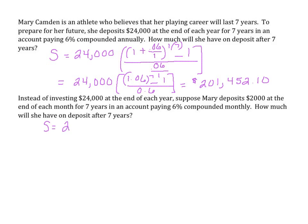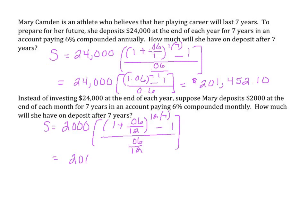The amount she will have is her payment of $2,000 times the quantity (1 plus 0.06 divided by 12), since we're compounding monthly. The exponent is 12 times 7 years, and then we subtract 1. All over 0.06 divided by 12. Simplifying: 0.06 divided by 12 is 0.005, so we have 1.005. 12 times 7 is 84, then subtract 1, all over 0.005.